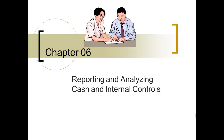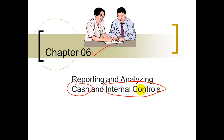Hey class, this is Roy again with a video lecture for chapter six where we cover two topics. One is our favorite asset cash, and another is a more conceptual topic called internal control, where we're trying to safeguard assets like cash and other assets like inventory from previous chapters. We also want to make sure with internal control steps and rules that we're going to have accurate financial records.